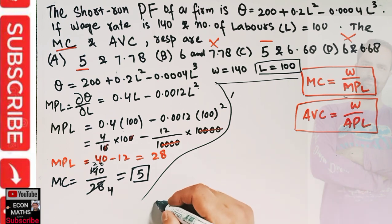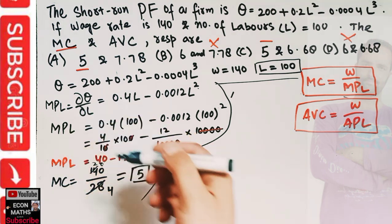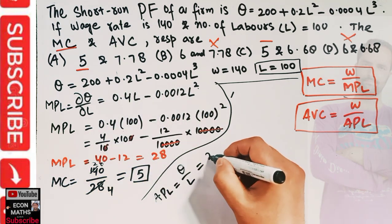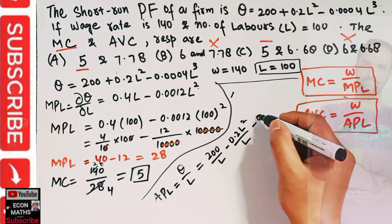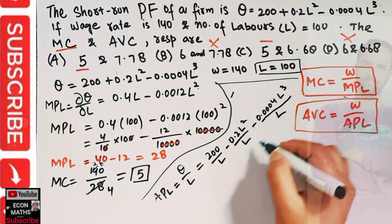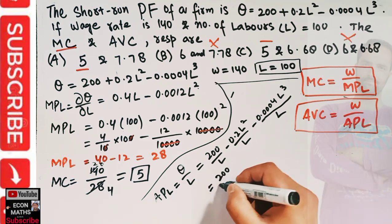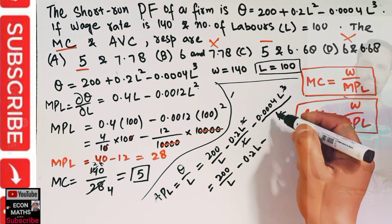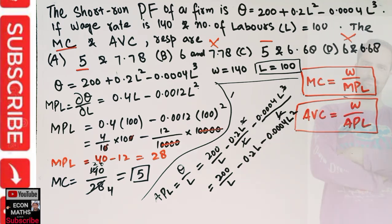The average product of labor, APL, is simply q divided by L. So dividing our production function by L: APL = 200/L + 0.2L²/L minus 0.004L³/L. Simplifying — the L cancels in each term — giving us: APL = 200/L + 0.2L minus 0.004L².